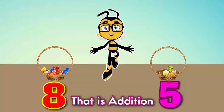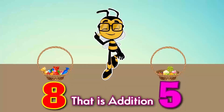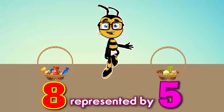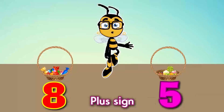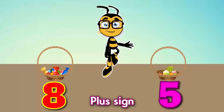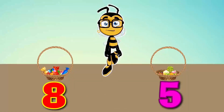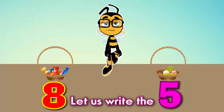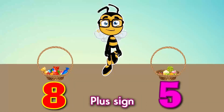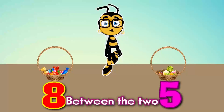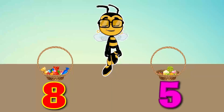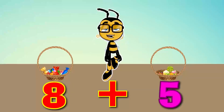We are going to put Smart's candies and Smarty's candies together — that is addition. Addition is represented by the plus sign. So, let us write the plus sign between the two numbers. Plus.